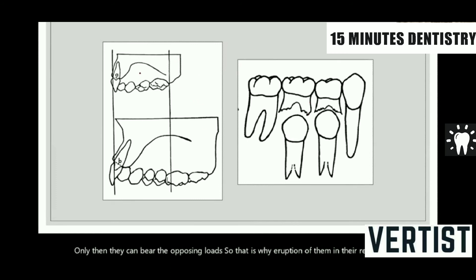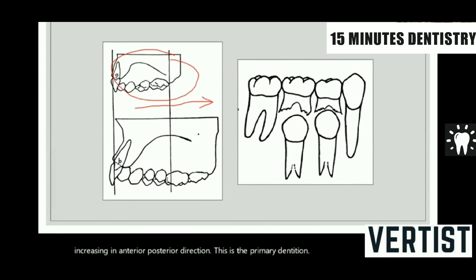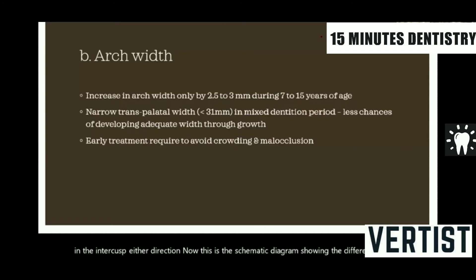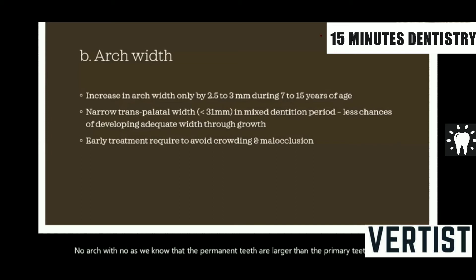In this schematic diagram, I have tried to show how the jaw increases in the anterior-posterior direction — this is the primary dentition. Once the first molar has started to erupt, you can see the profound increase in the anterior-posterior direction. This schematic diagram also shows the difference in the mesiodistal dimension of the primary molars versus the premolars. Regarding arch width, as we know, permanent teeth are larger than primary teeth. To accommodate them, the width of the arch has to be increased, and usually during the period of 7 to 15 years, the arch width gets increased.